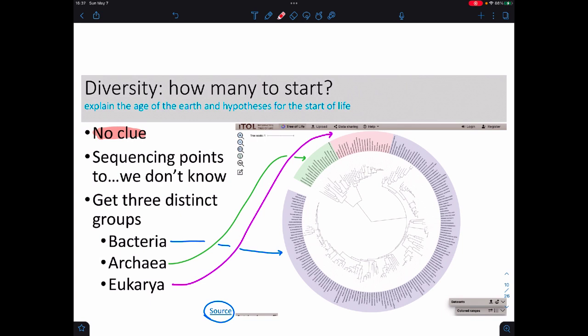When we start looking at life starting, well, how many things were there initially? How many different species? And the answer is absolutely no clue. There's no way for us to be able to look backwards and figure that out. But what we can do is use sequences to point towards something in the middle. The thing here in the middle is called the GCA, which is the Great Common Ancestor.